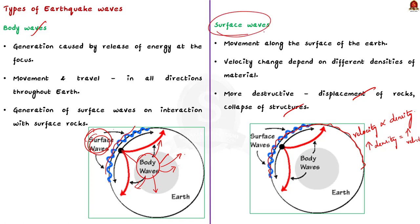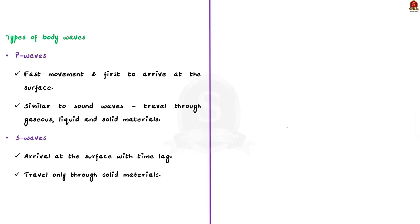As for the types of earthquake waves, we saw two types. One is body waves and the other one is surface waves. And the body waves, it is further classified into two types. One is P waves that is the primary waves and the other one is S waves that is the secondary waves.